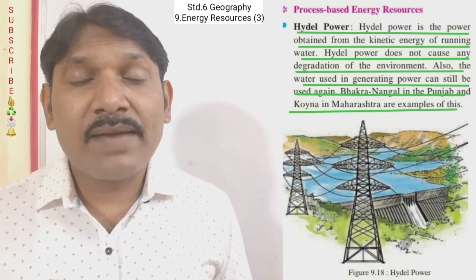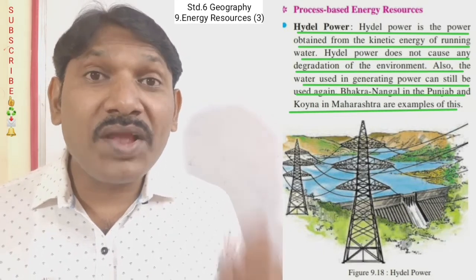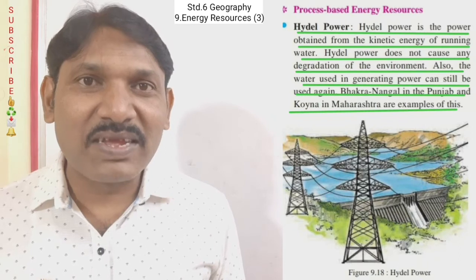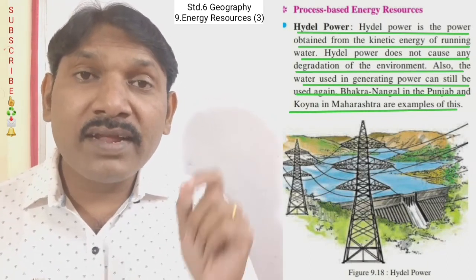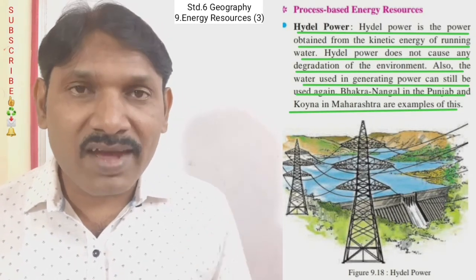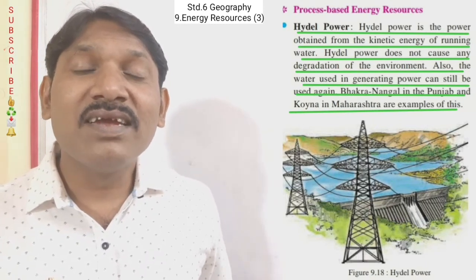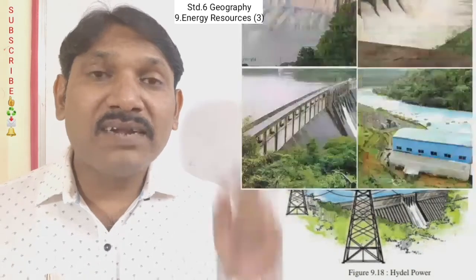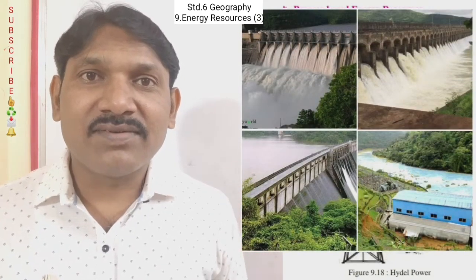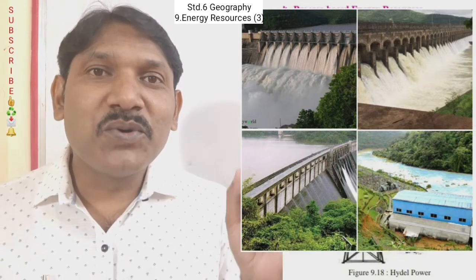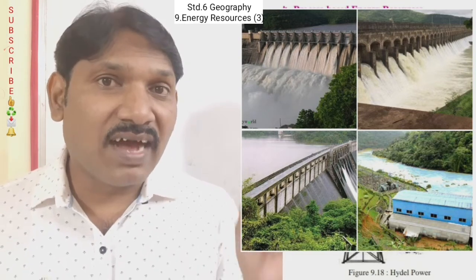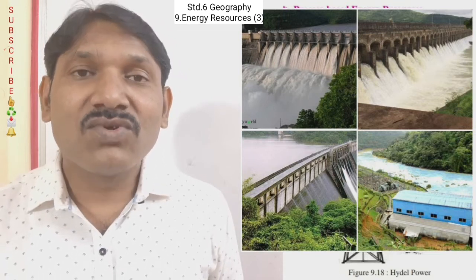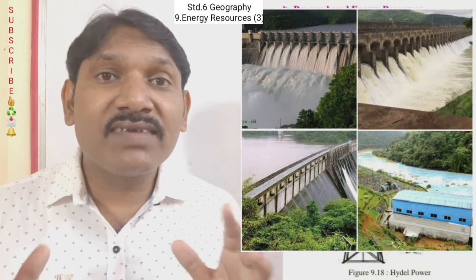Koina Dam is one of the largest dams in Maharashtra, constructed on the Koyna river which rises in Mahabaleshwar hill station. The major hydroelectric projects in Maharashtra are: Bhandara hydroelectric project in Ahmednagar, Bhathgar hydroelectric project in Pune, Bhatsa hydroelectric project in Thane, and Bheera hydroelectric project in Raigad.